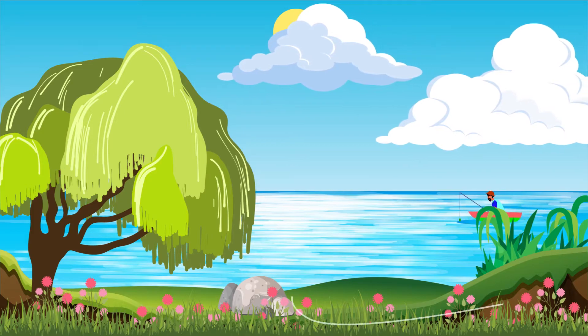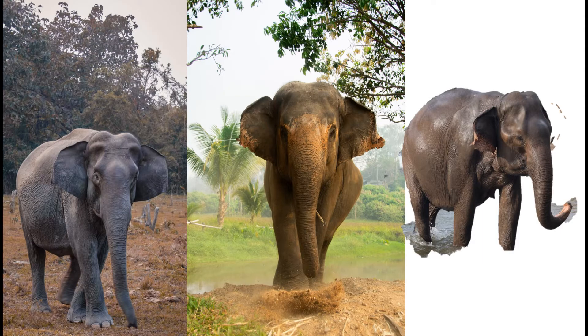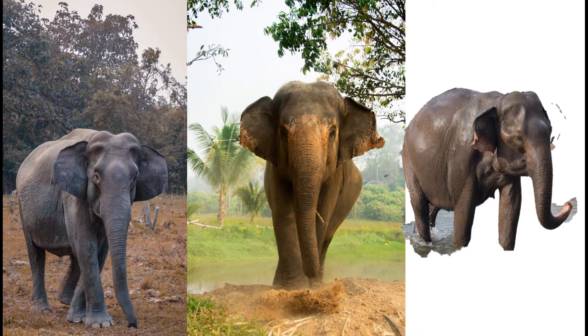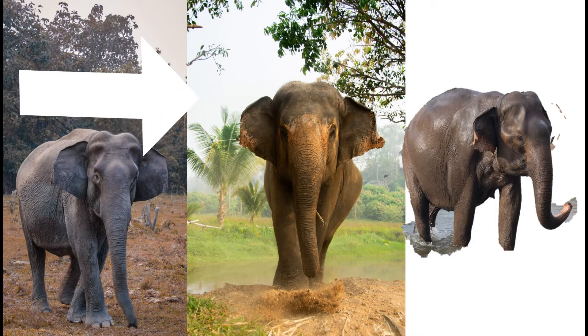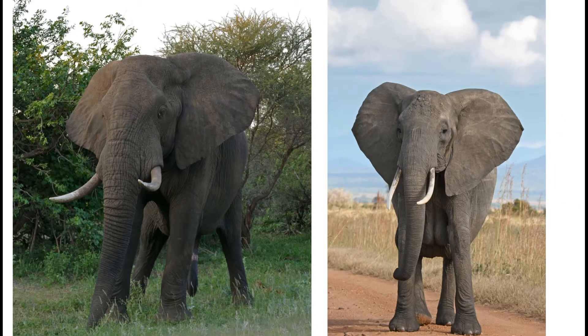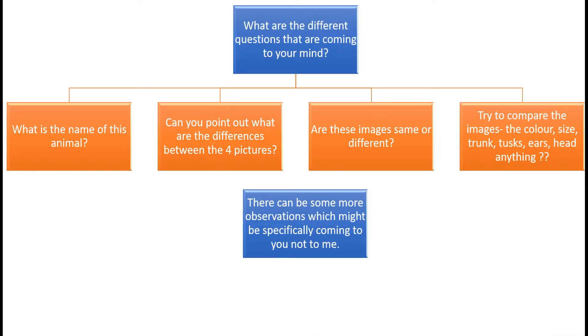Very good kids. I'm going to show you some beautiful images and in those images you have to keep yourself very active because you have to find out differences, compare the images. Oh what a beautiful animal! What is the name of this animal? It's elephant ma'am. What other things you can observe in all four images? What are the different questions that are coming to your mind?